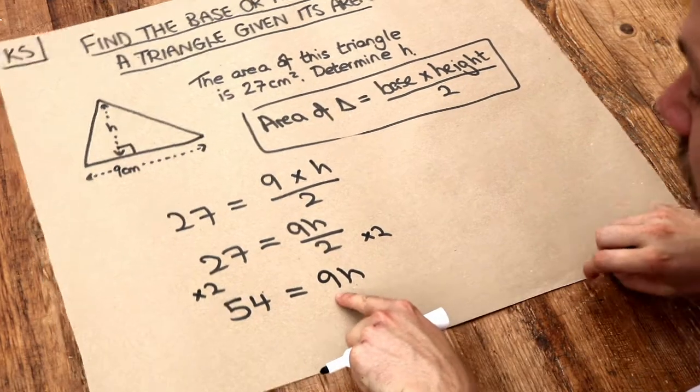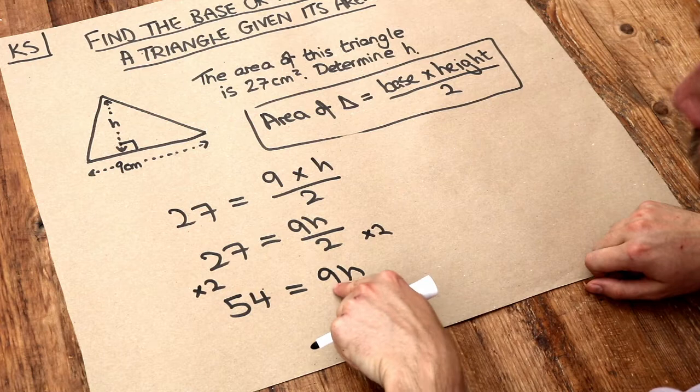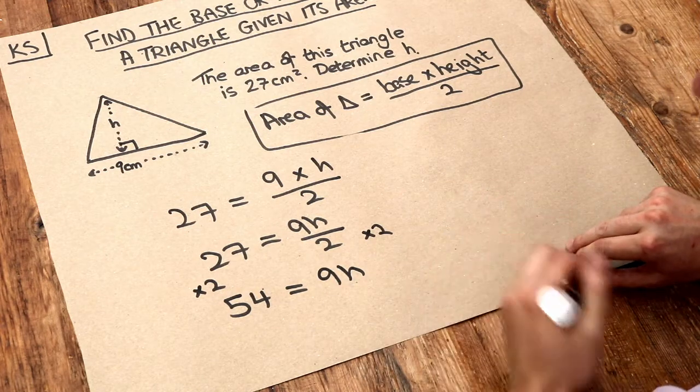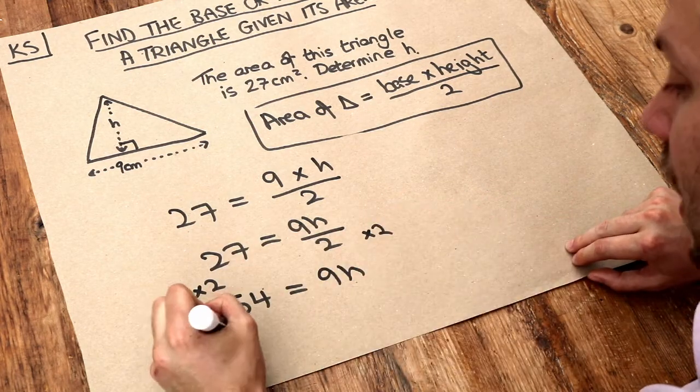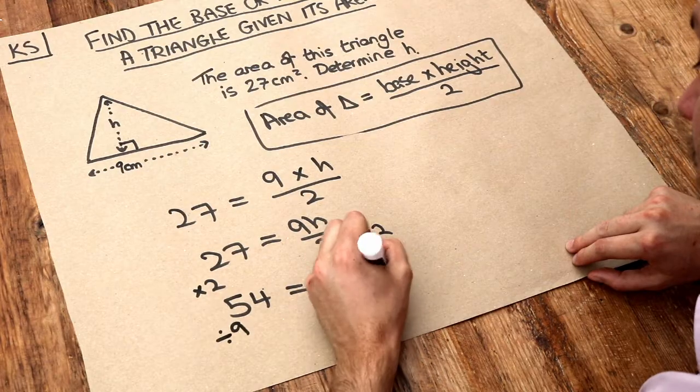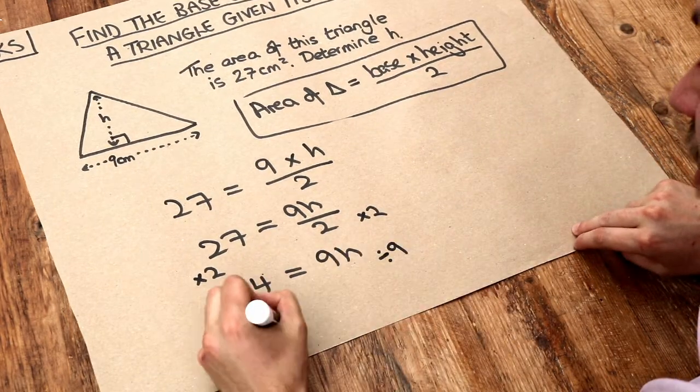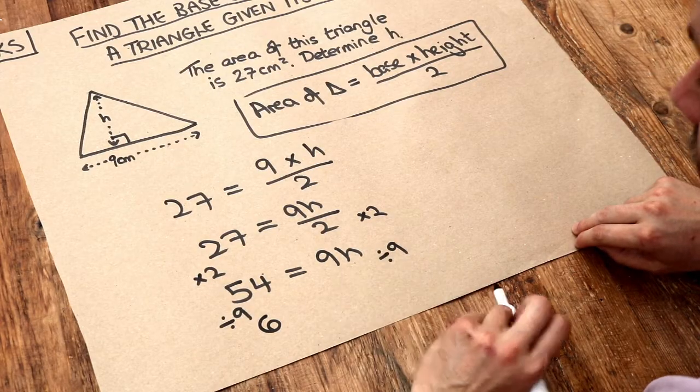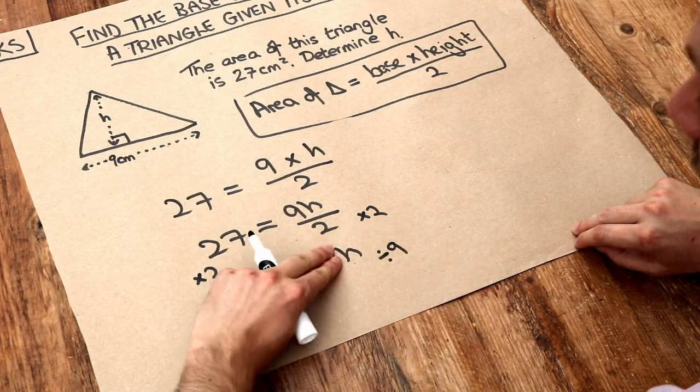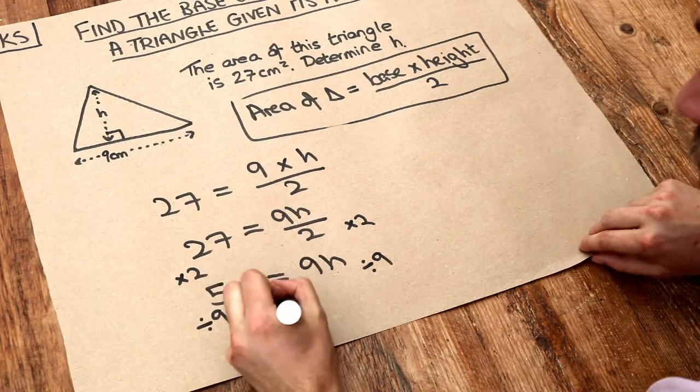Now the h is being multiplied by 9. We want to get rid of that multiplied by 9. What's the opposite of multiplying by 9? Divided by 9. So therefore we divide both sides of the equation by 9. 54 divided by 9 is 6, and 9h divided by 9, well the divide by 9 cancels out the times by 9, we just get h.